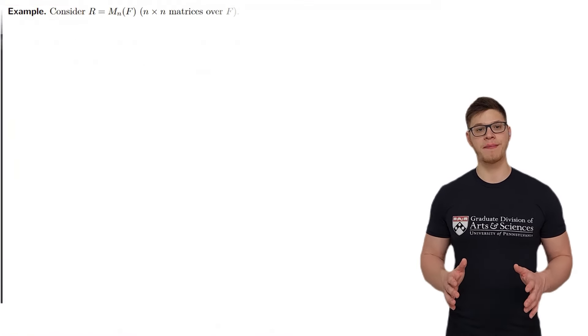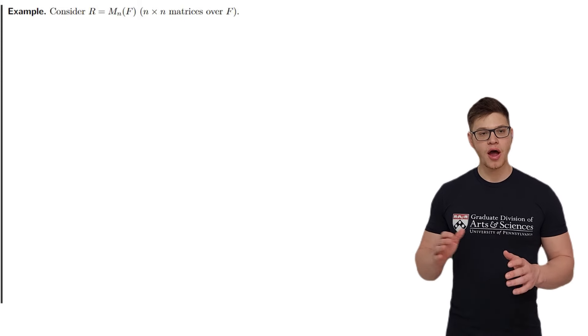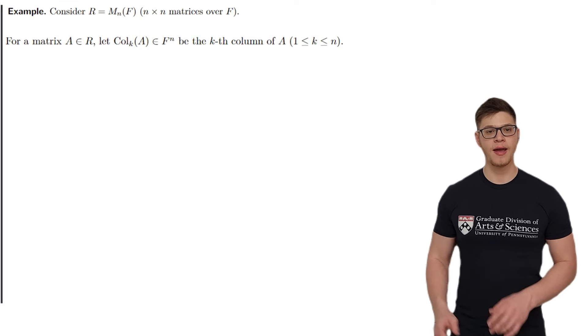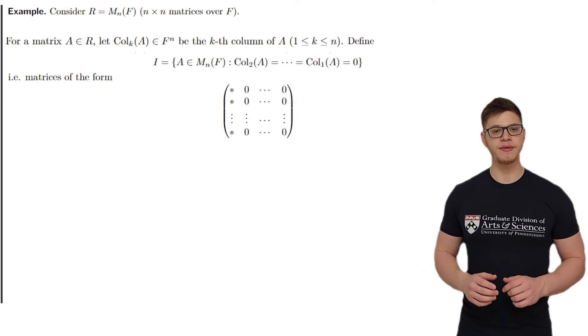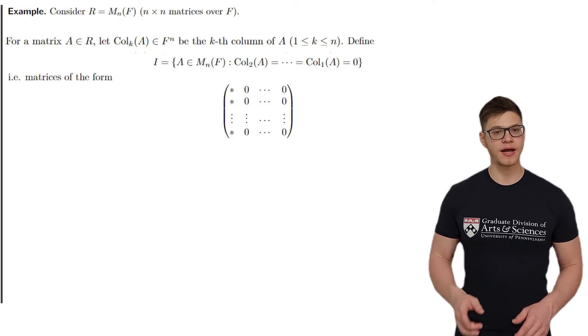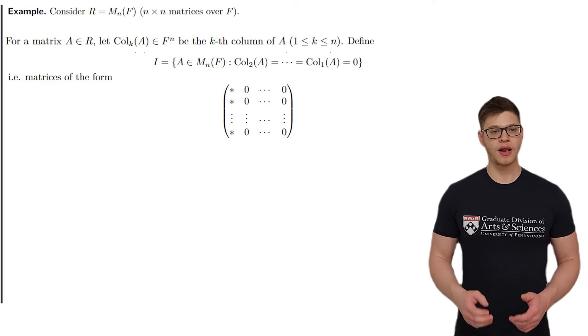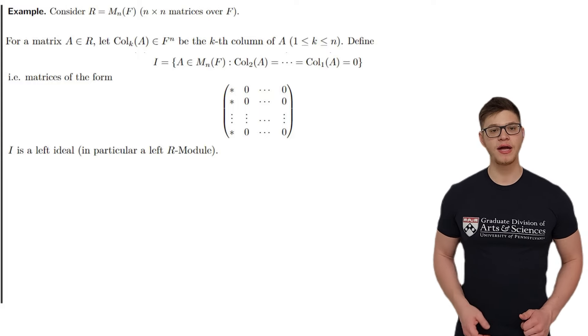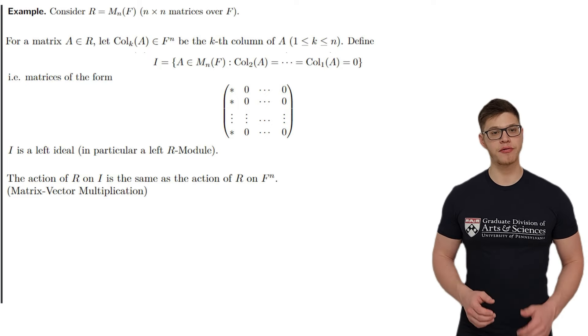Now, for a more substantial example, consider R to be M_n(F), the ring of n by n matrices over a field F. Fix some matrix that we'll call A, and denote the kth column of A by col_k(A). Consider the set I of matrices whose only potentially non-zero entries are in the first column. Note that, in particular, the first column doesn't have to be non-zero, so, for example, the zero element is in I. I is a left ideal, in particular, a left R-module, because the definitions here coincide, and the action of R on I turns out to be the same as the action of R on F^n, which, in both cases, is matrix vector multiplication.